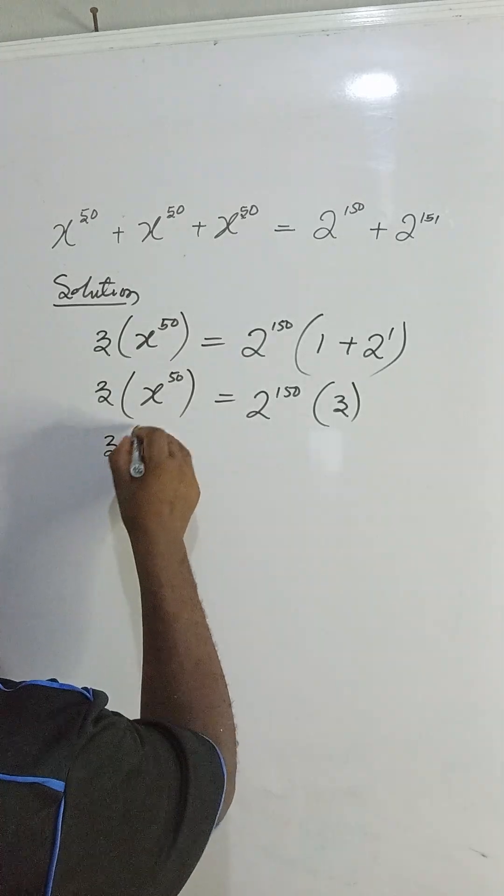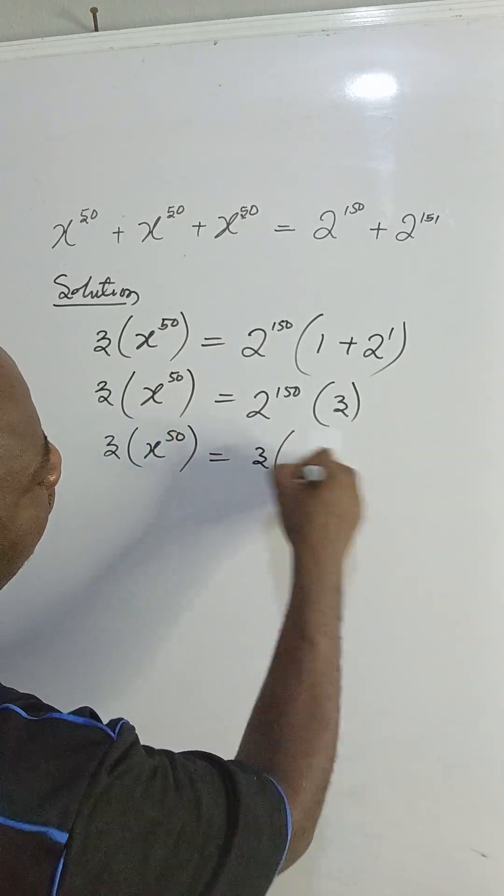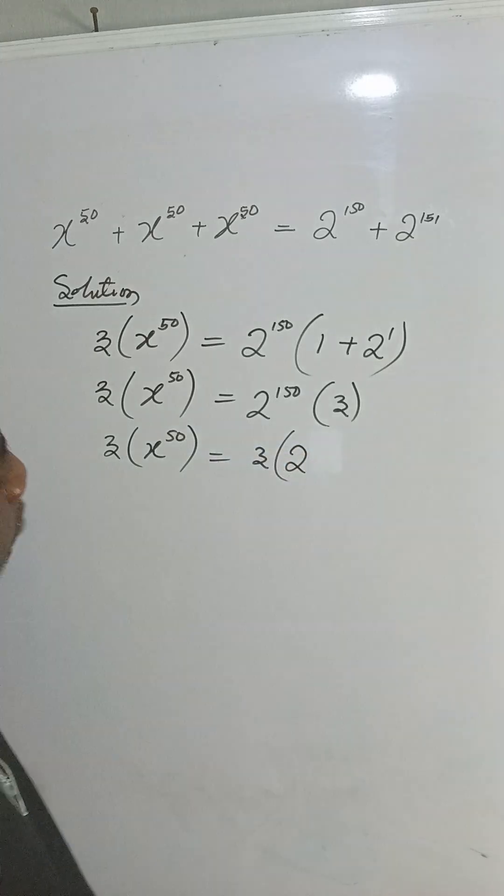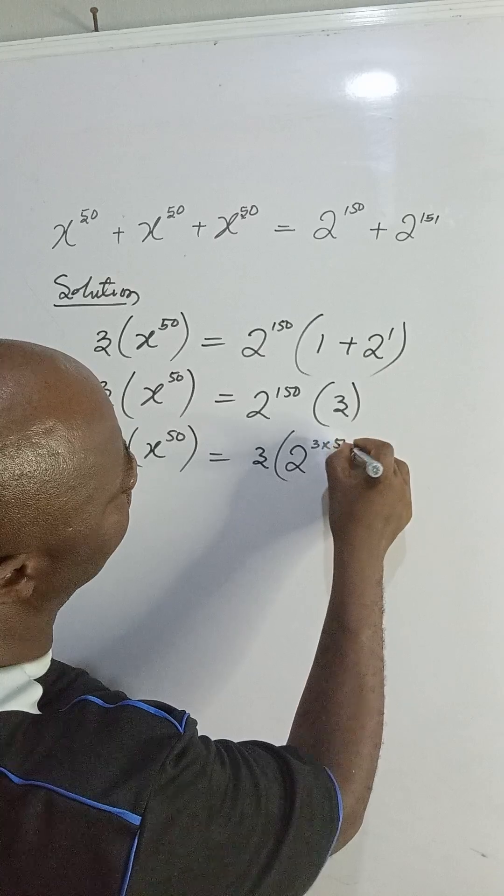So this gives me 3 times x to the power of 50 equal to 3 times 2 to the power of 3 times 50.